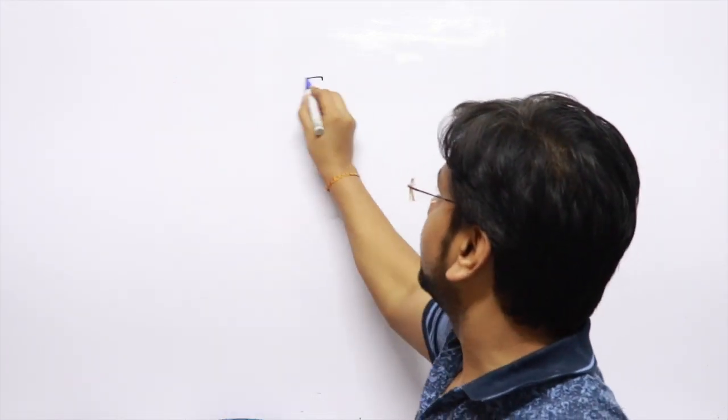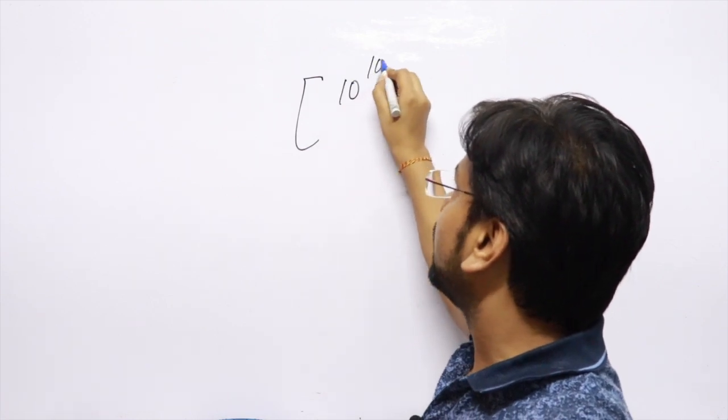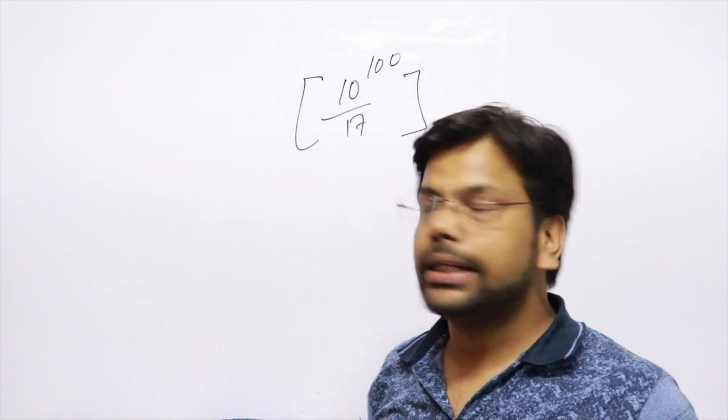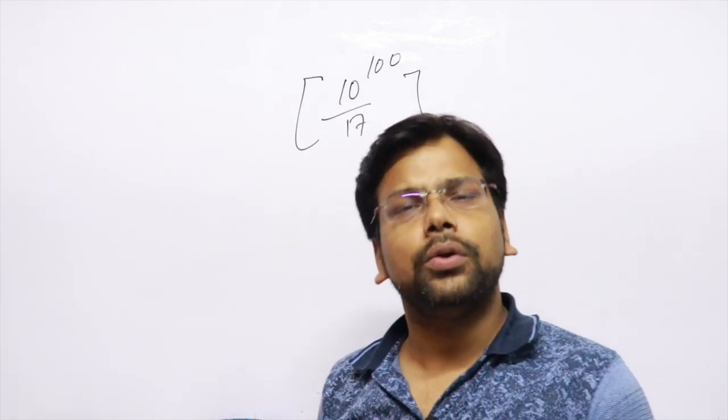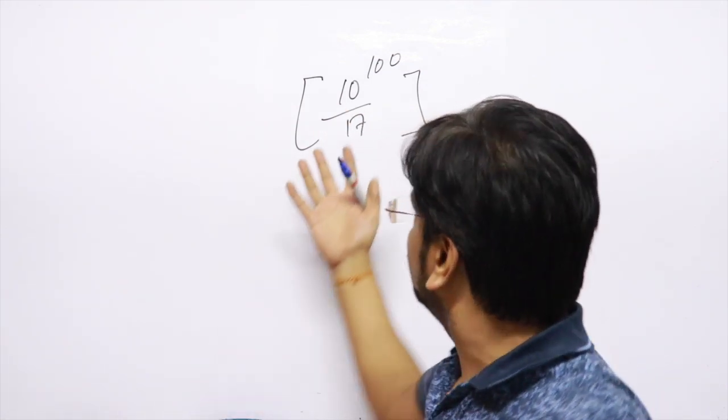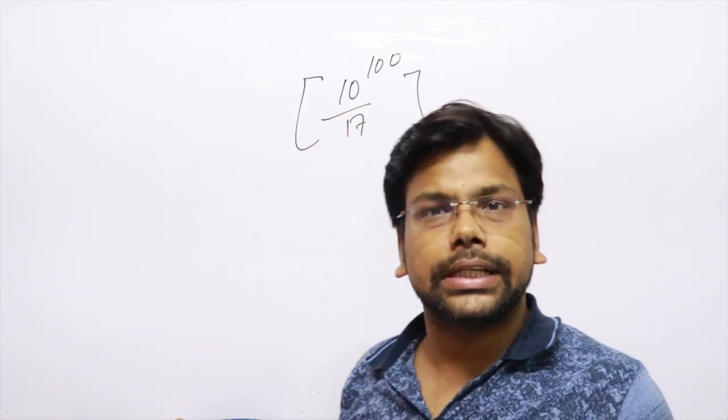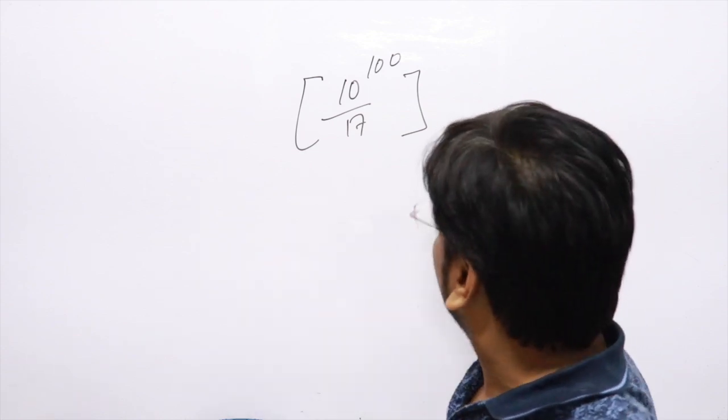So the question is nothing but 10 raised to the power of 100 divided by 17. We are looking for nothing but the integral value of this one. Integral means what? We are looking for nothing but if I divide this one, integral means that I need which coefficient?